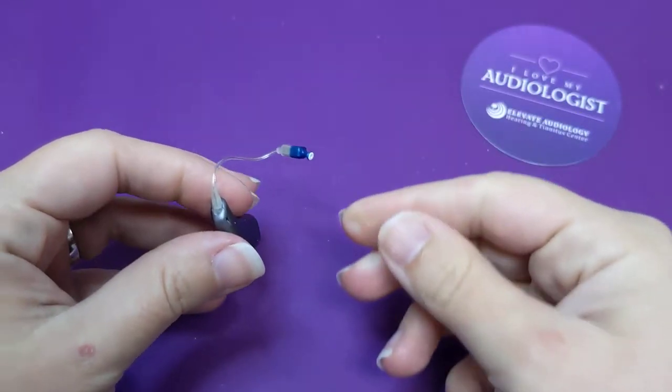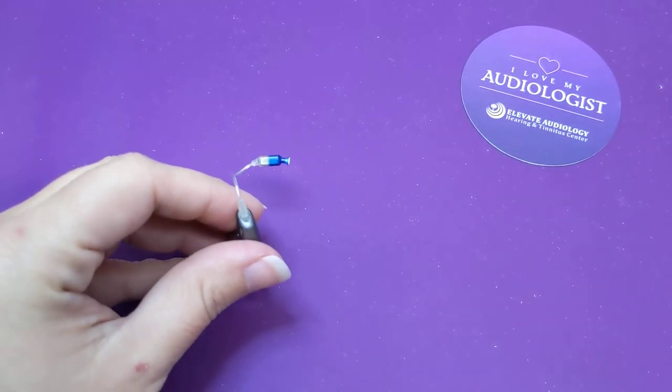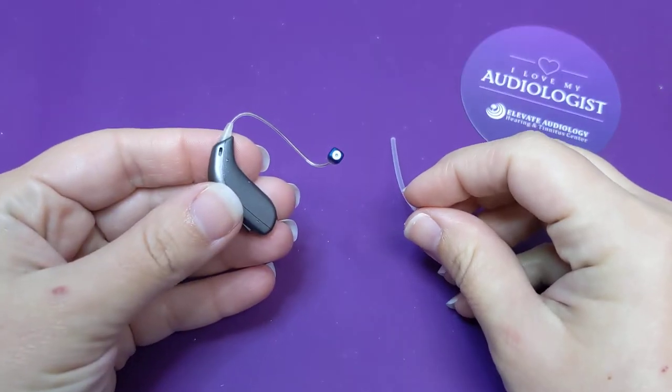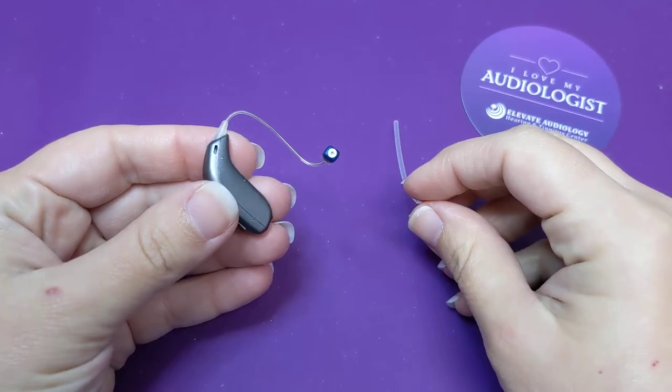All right, on this video we're going to show you how to put an anchor or a sports lock on an Oticon right receiver in the ear hearing aid.